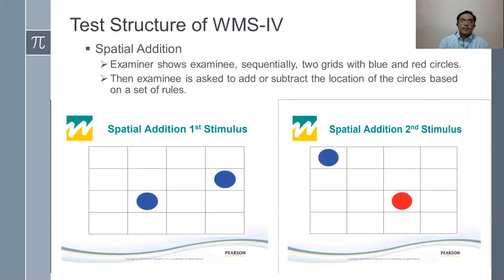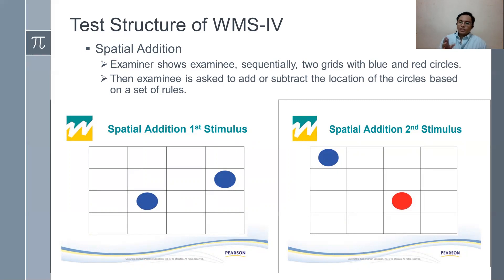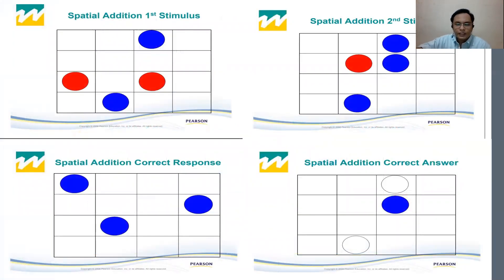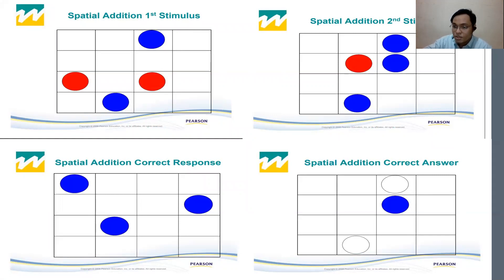For spatial addition: the examiner shows the examinee sequentially two grids with blue and red circles, and the examinee is asked to add or subtract the location of the circles based on a set of rules. The grids have various positions and colors for the circles. There are scoring procedures where the correct response is identified, and through scoring, the memory status of the patient or examinee can be determined.